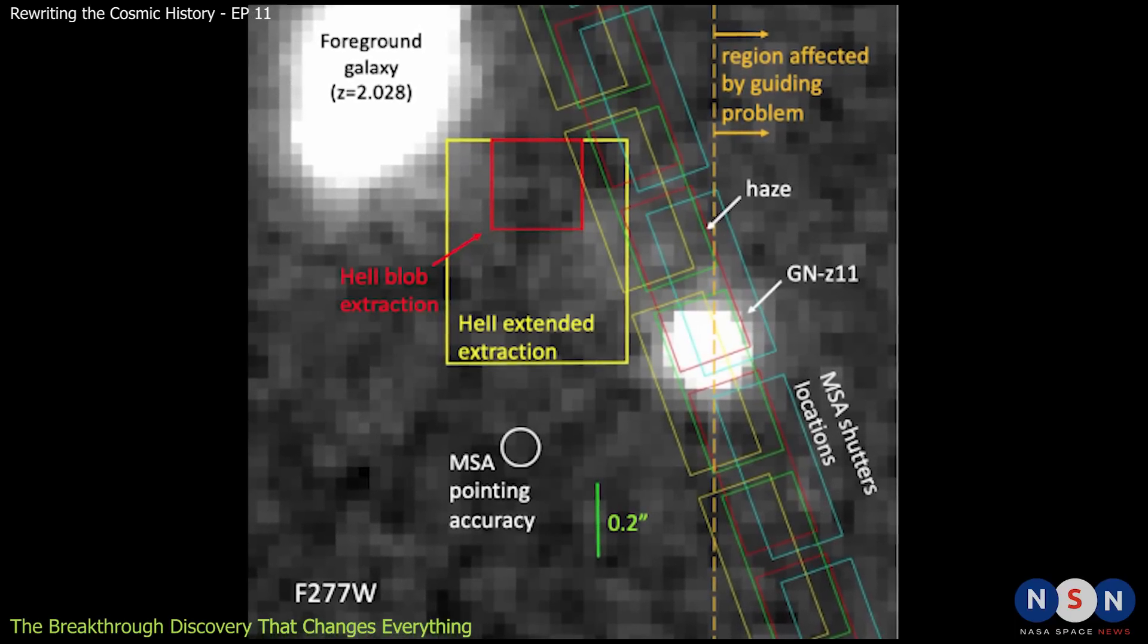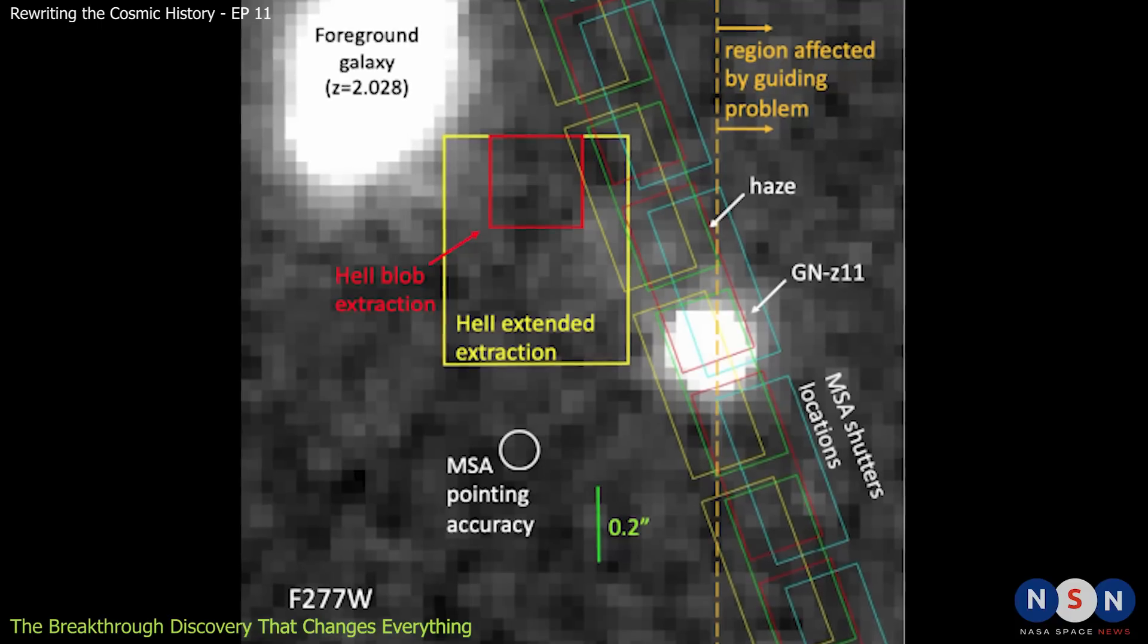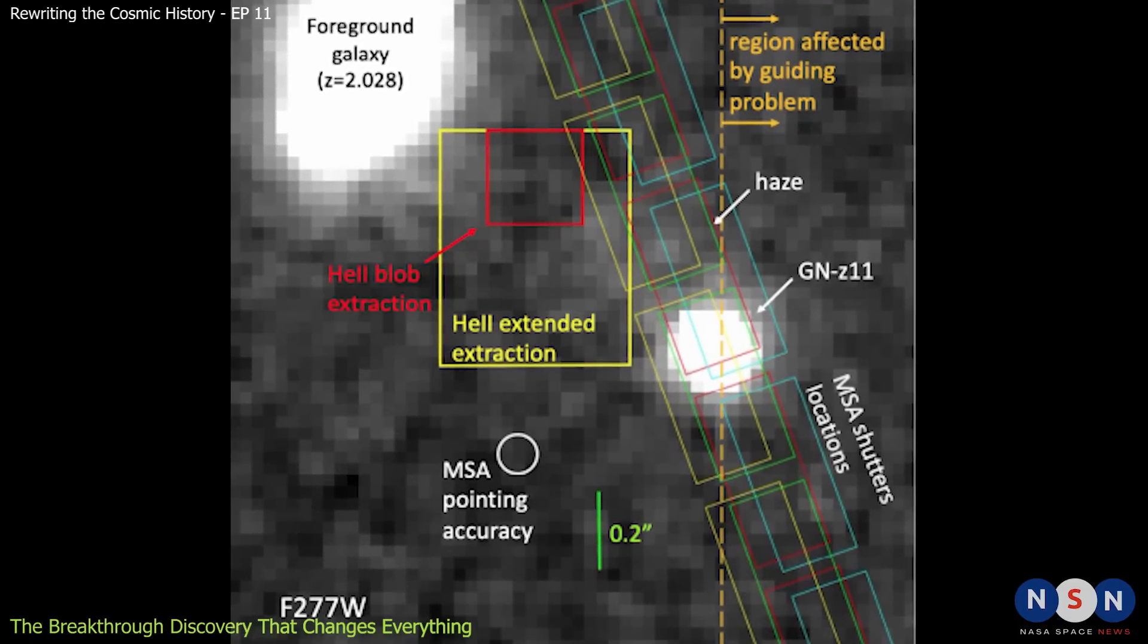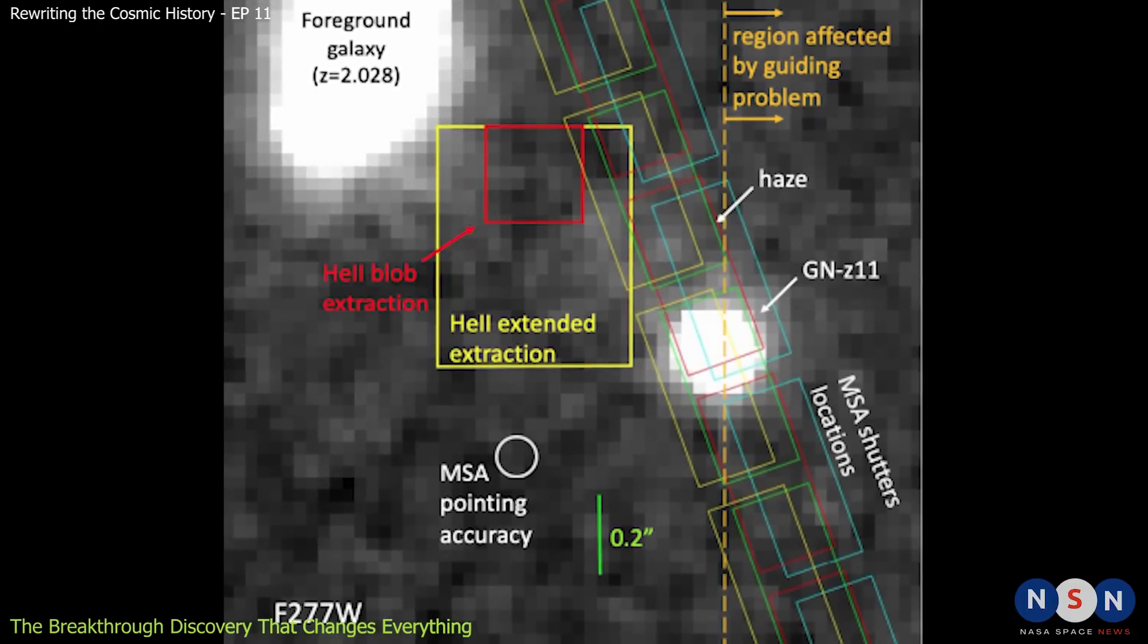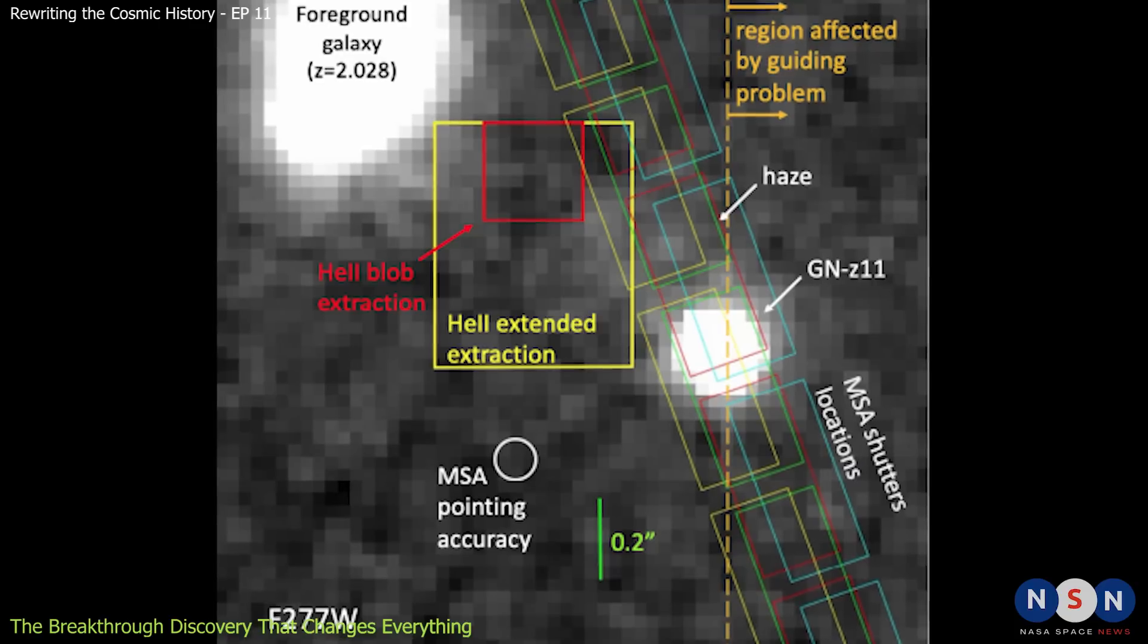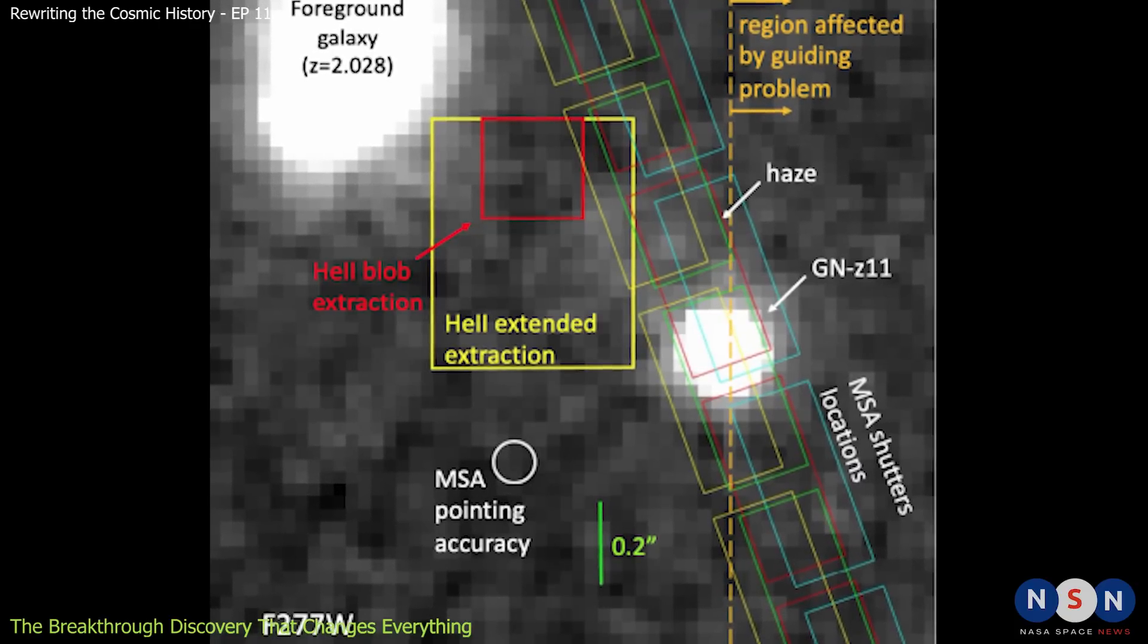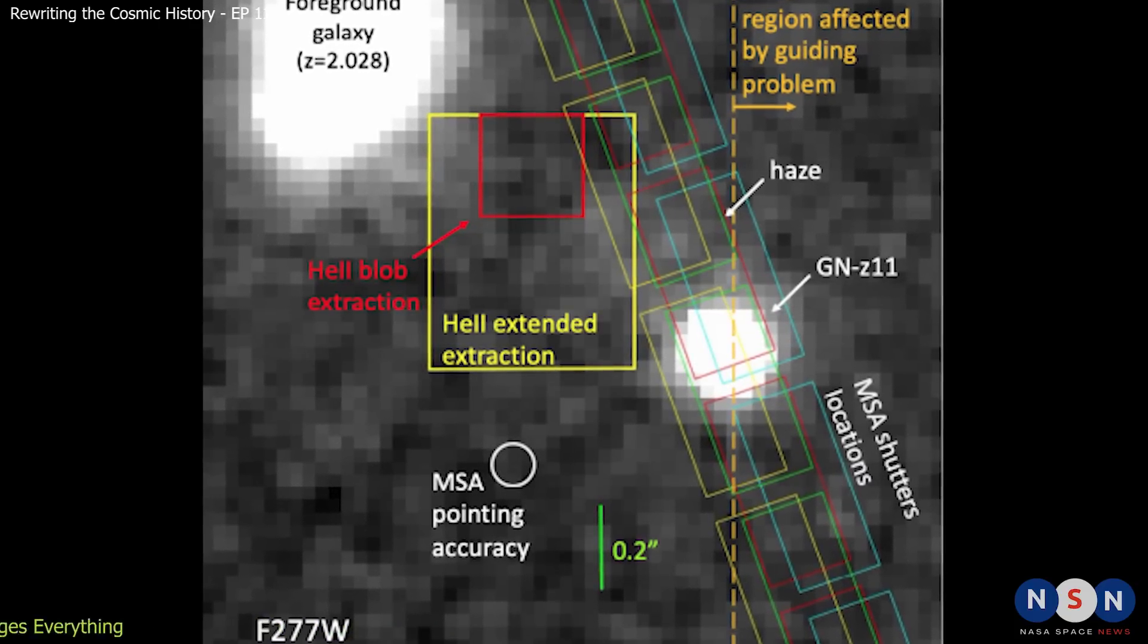They concluded that these features were consistent with Pop 3 stars, contributing about 10% to 20% of the total light from GNZ 11. This would imply that Pop 3 stars were still forming in this galaxy when it was about 400 million years old.